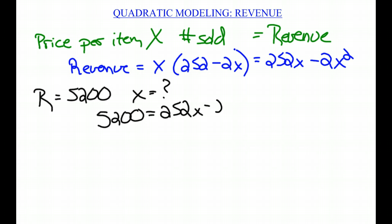252X minus 2X squared equals $5,200. How do I solve that? Eventually I'll use the quadratic formula. First I'll have to get 2X squared minus 252X plus 5200 equals zero. Now it's set up for the quadratic formula.